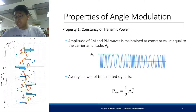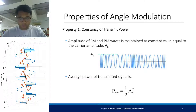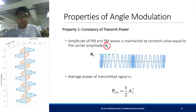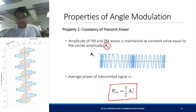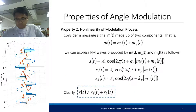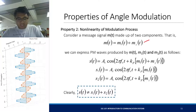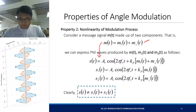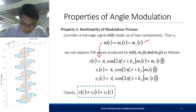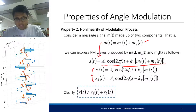Some properties: the good thing about angle modulation in general is that the power of your transmission is defined only by the amplitude of the carrier signal — it won't be defined by the power of the message signal. So the average power of the transmitted signal is constant at one-half A_c squared. However, the modulation process is nonlinear. If you have a sum of two messages and put this into a frequency or phase modulator, it results in an expression that is not the sum of the individual modulated signals for m1 and m2 separately.